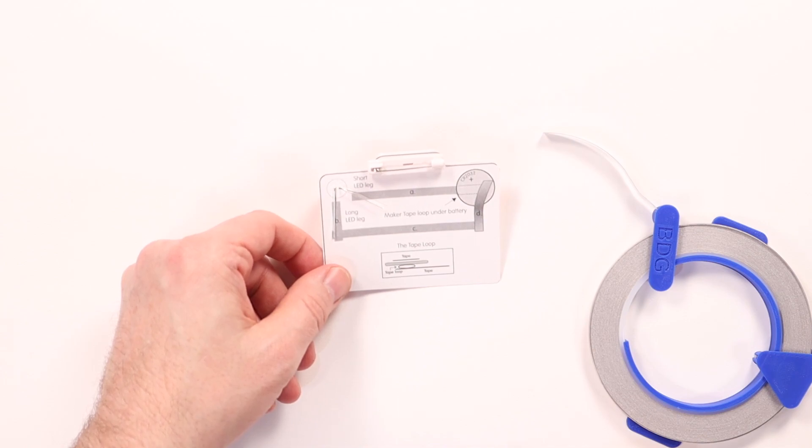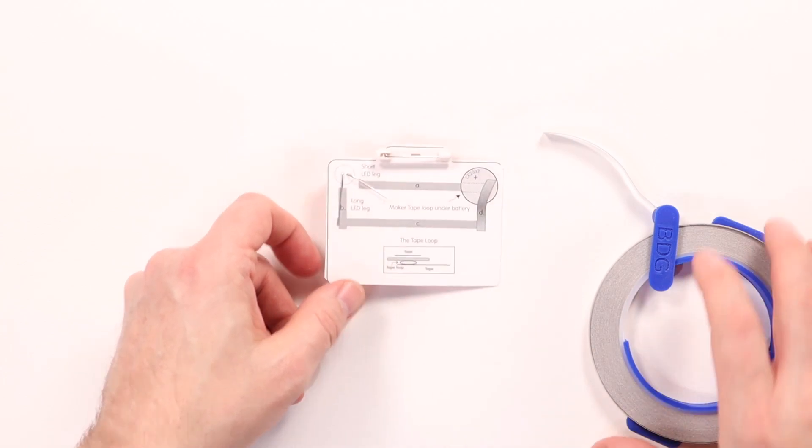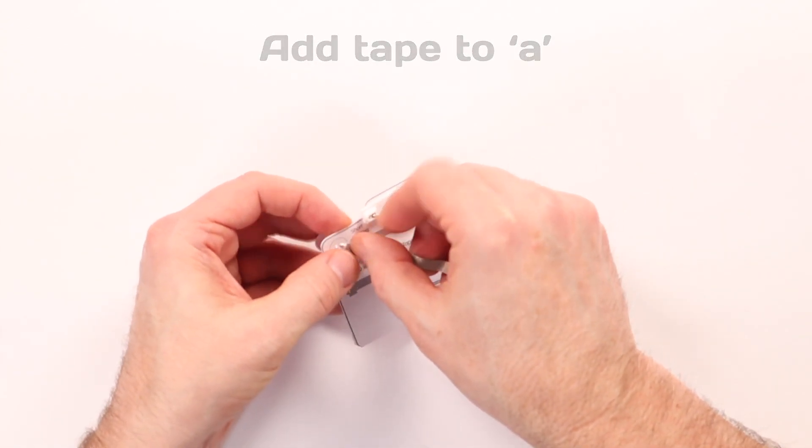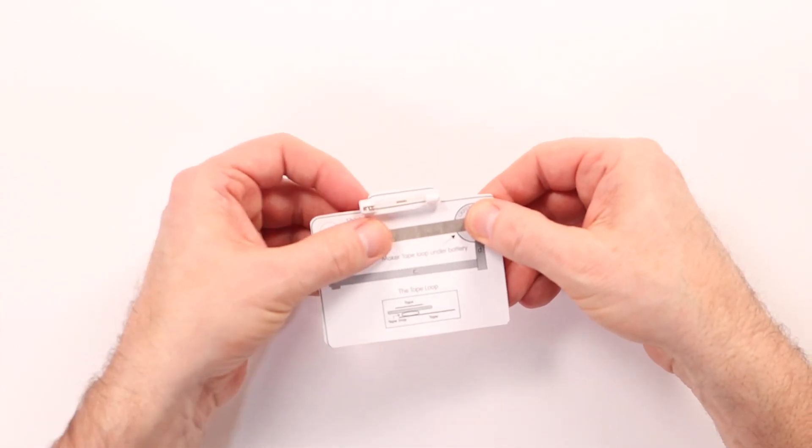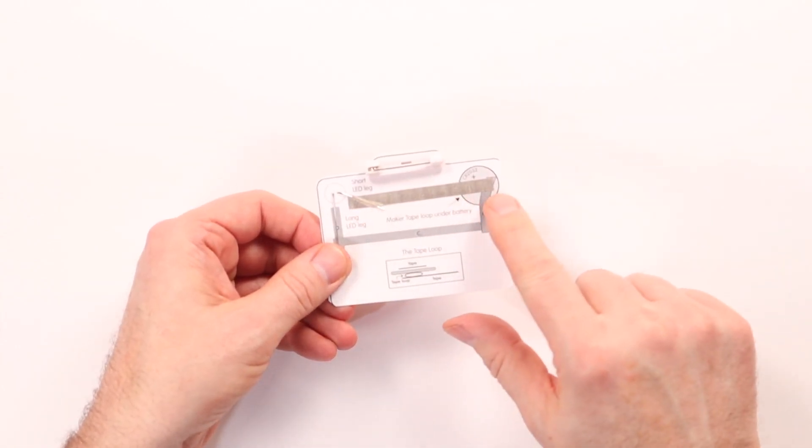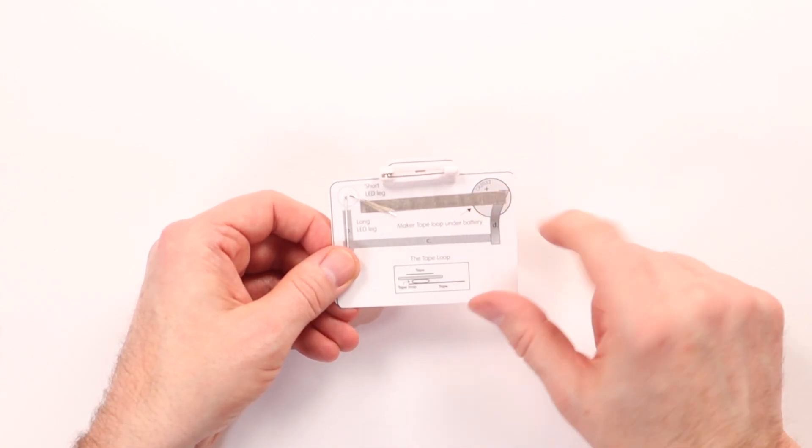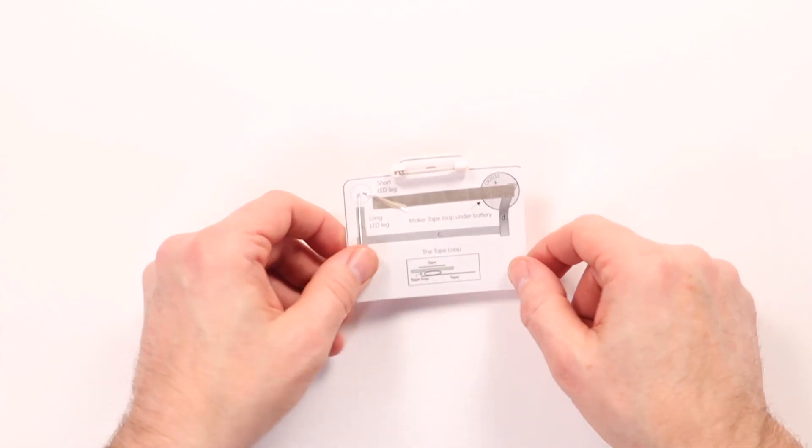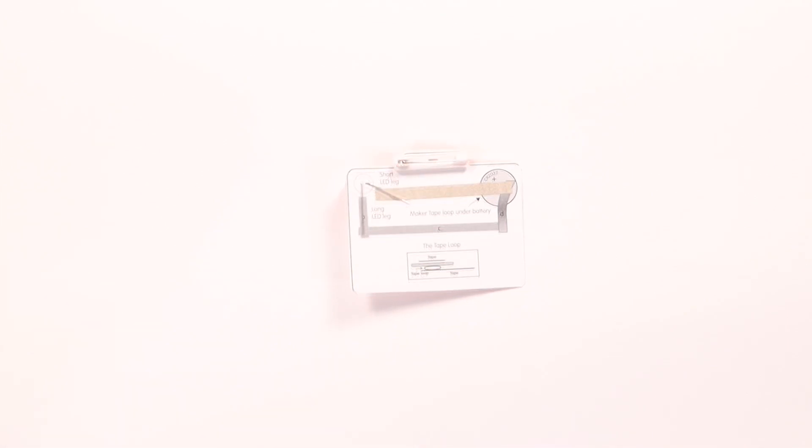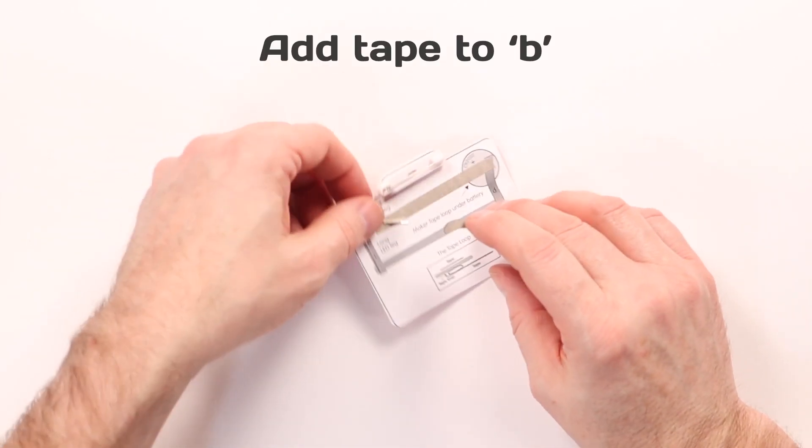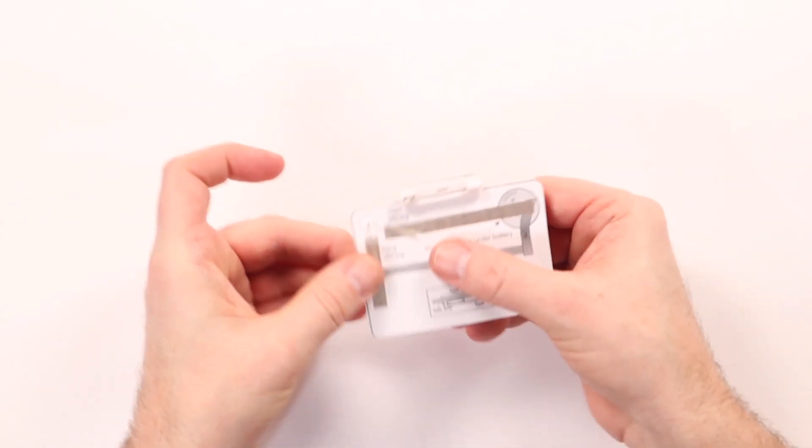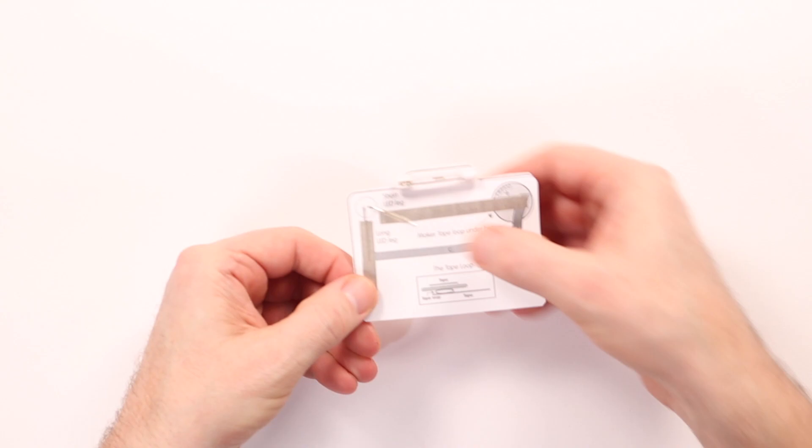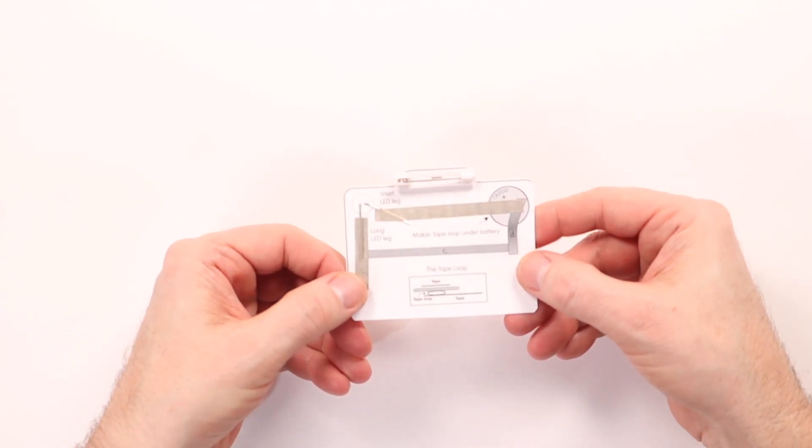Our first strip A holds down the LED leg, and that runs from there to there, so it should go over this illustration of the battery. Next we're going to add a piece of tape over the other leg, running down like that. So we now have our two LED legs secured down to the paper with maker tape.